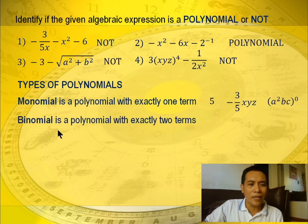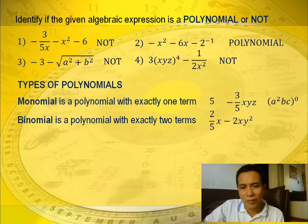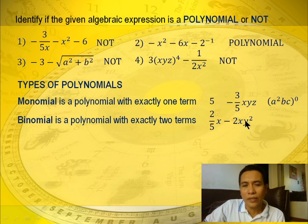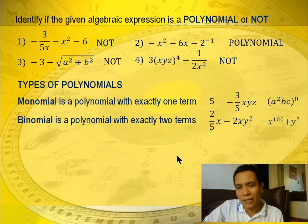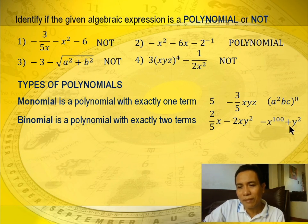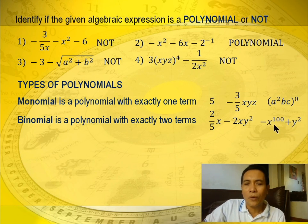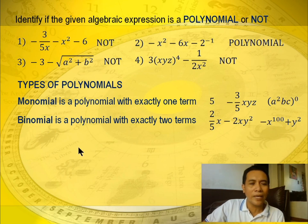Next is binomial — exactly two terms. Example: 2x minus 2xy squared. That's two terms, so it is a binomial. Another example: negative x raised to 100 plus y squared — two terms, so that's also a binomial.